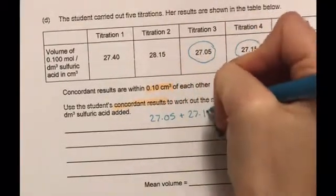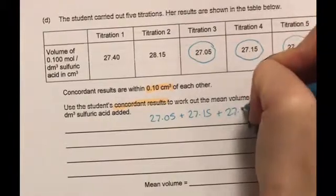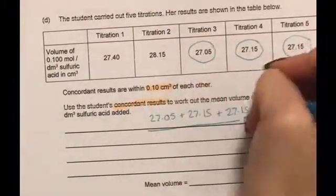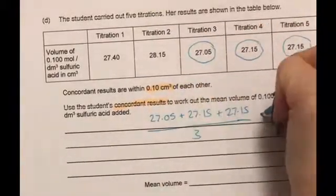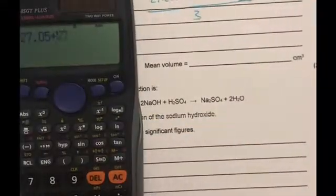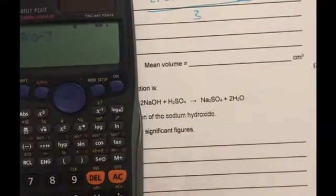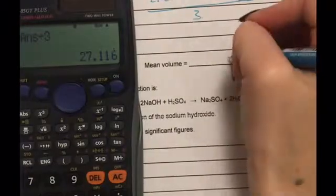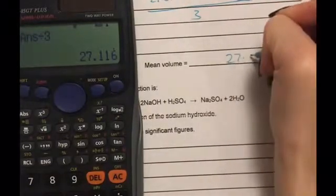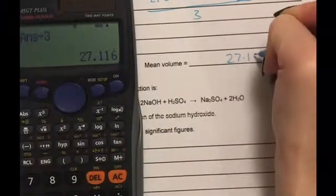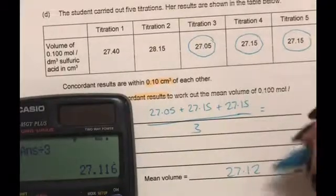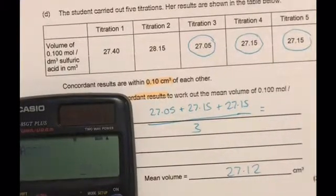So to work out our mean we're simply going to add those together divide by the number there are which is 3 and that's going to get us 27.12 and we're going to go to two decimal places because that's what I used there.